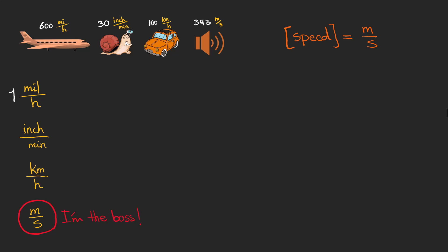So let's see how we can write 1 mile per hour in meters per second. 1 mile is 1.6 kilometers or 1,600 meters. And 1 hour is 60 minutes or 3,600 seconds.